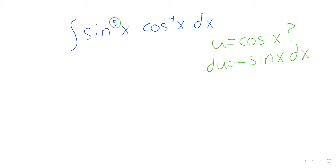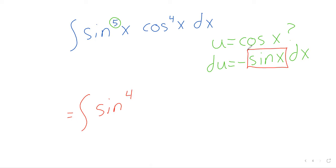So we're going to need a sine just by itself. The sine to the fifth is sine to the fourth times sine of x. And then we've got that cosine to the fourth.